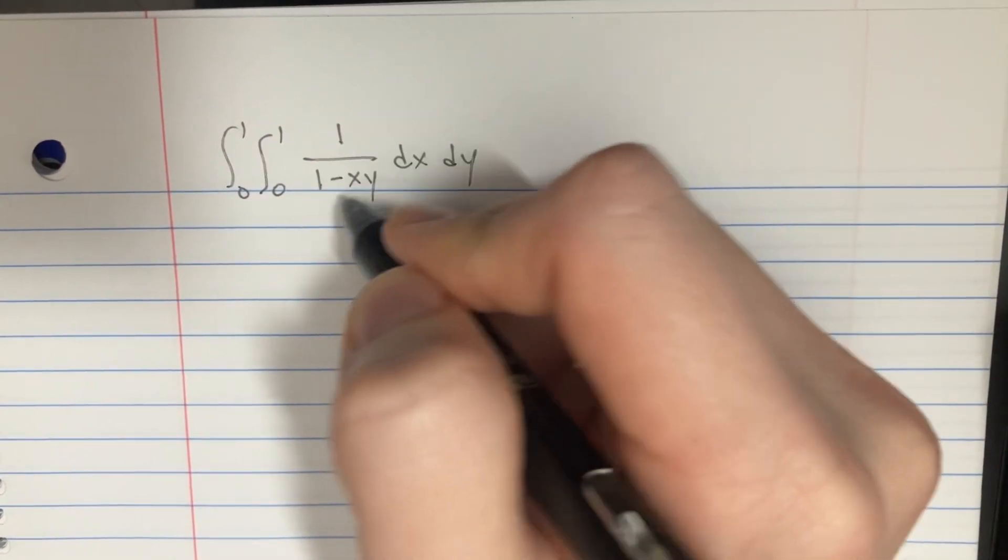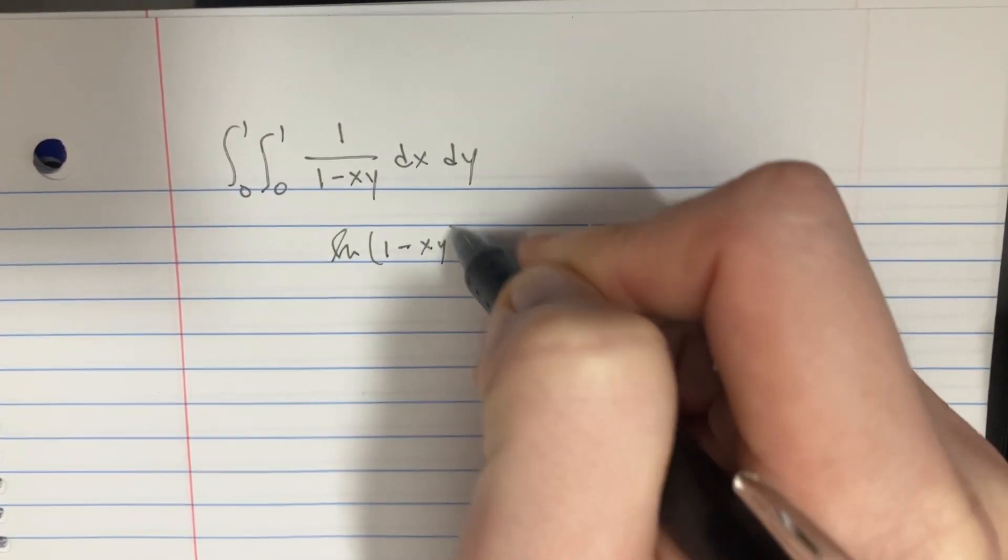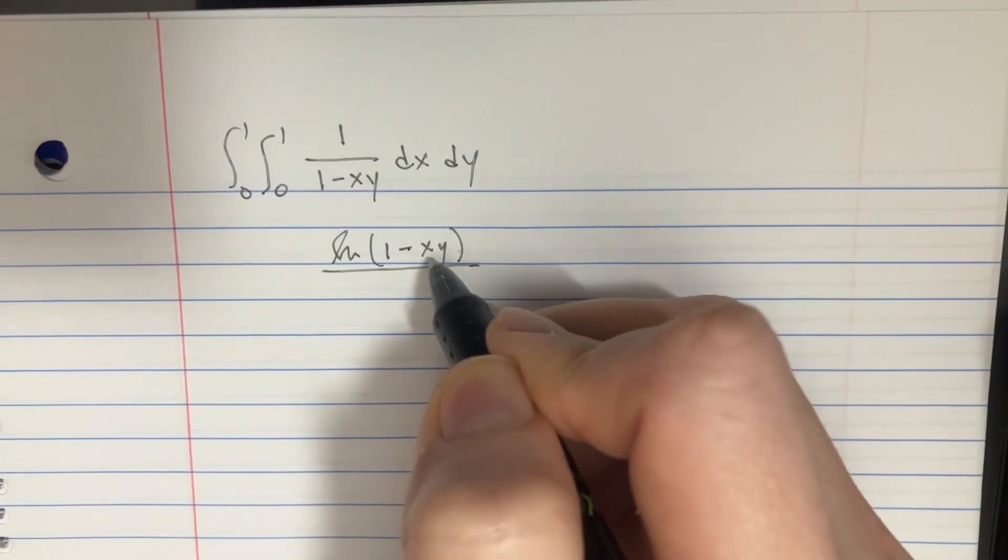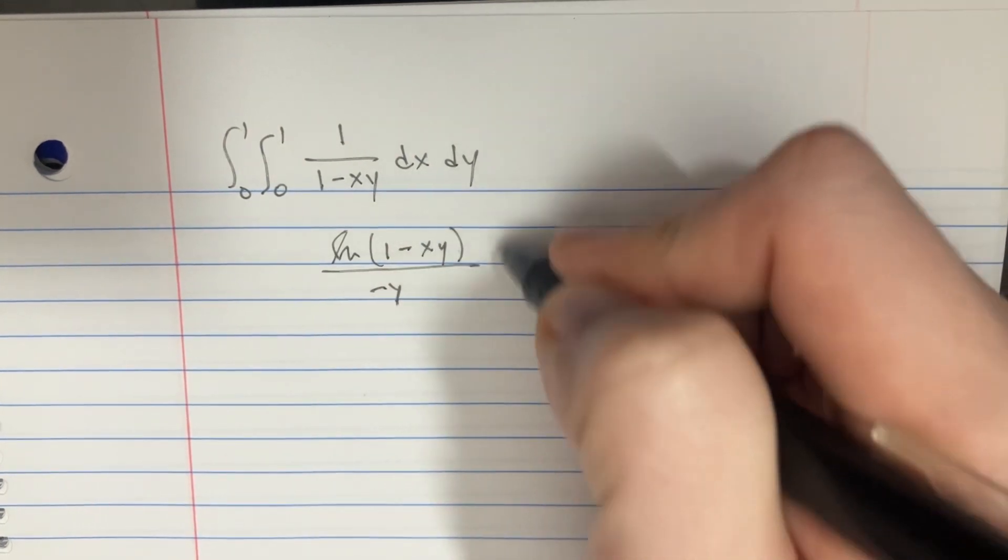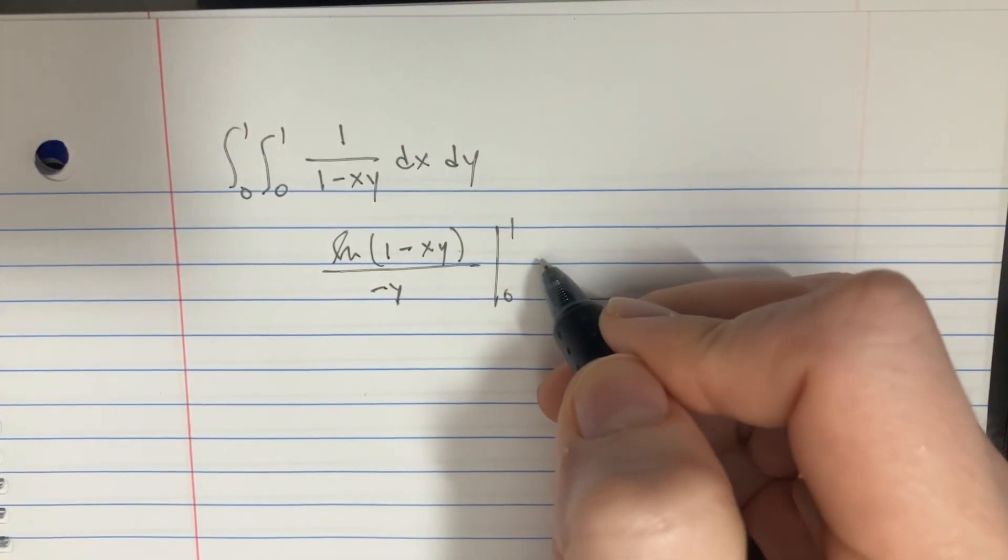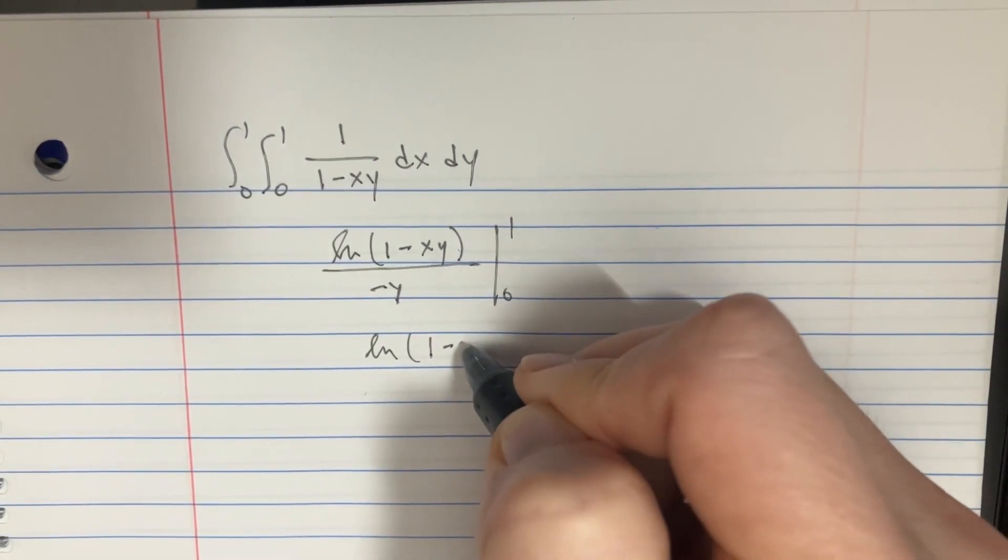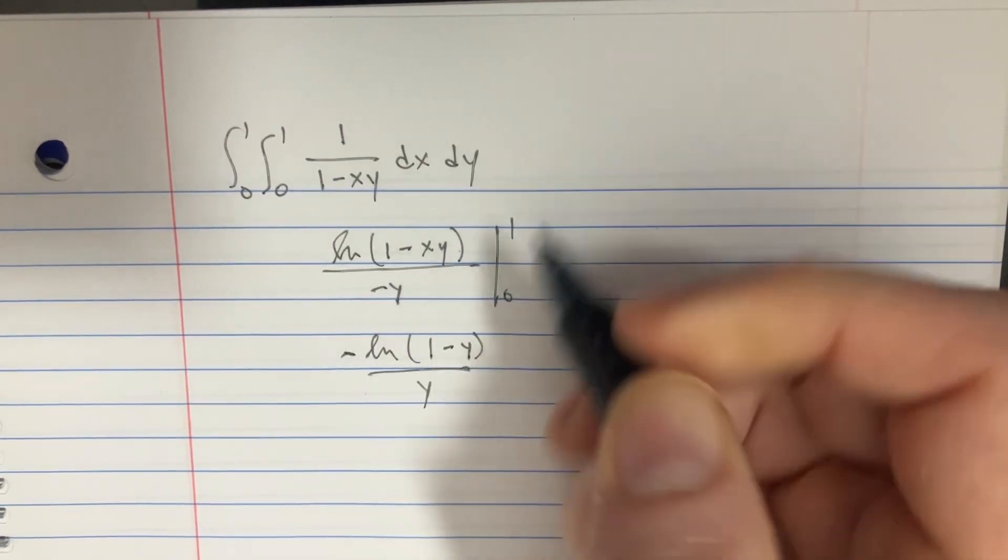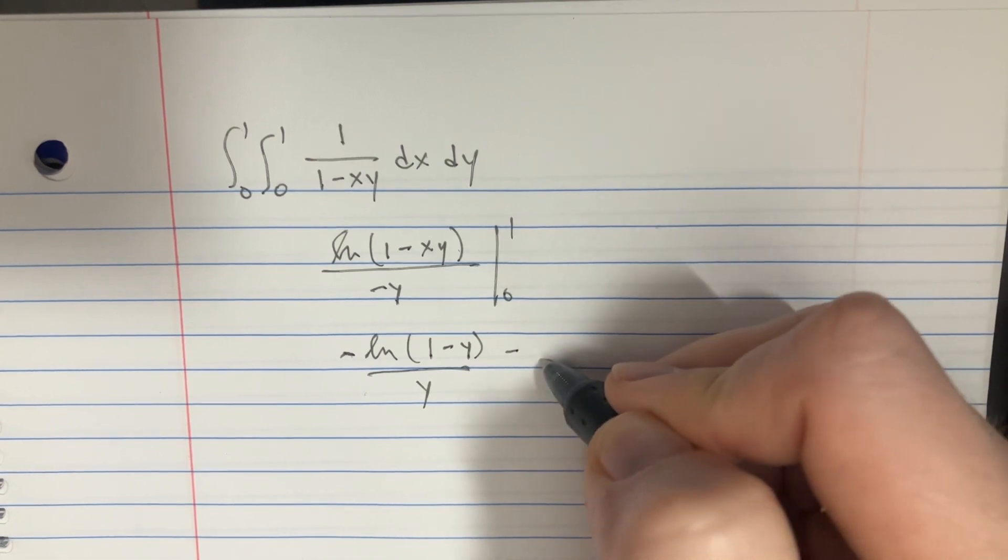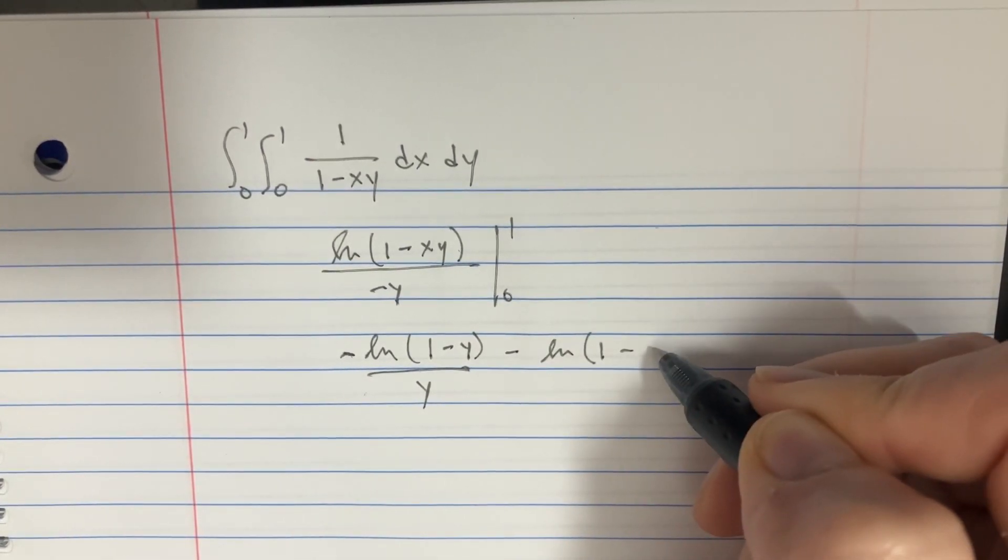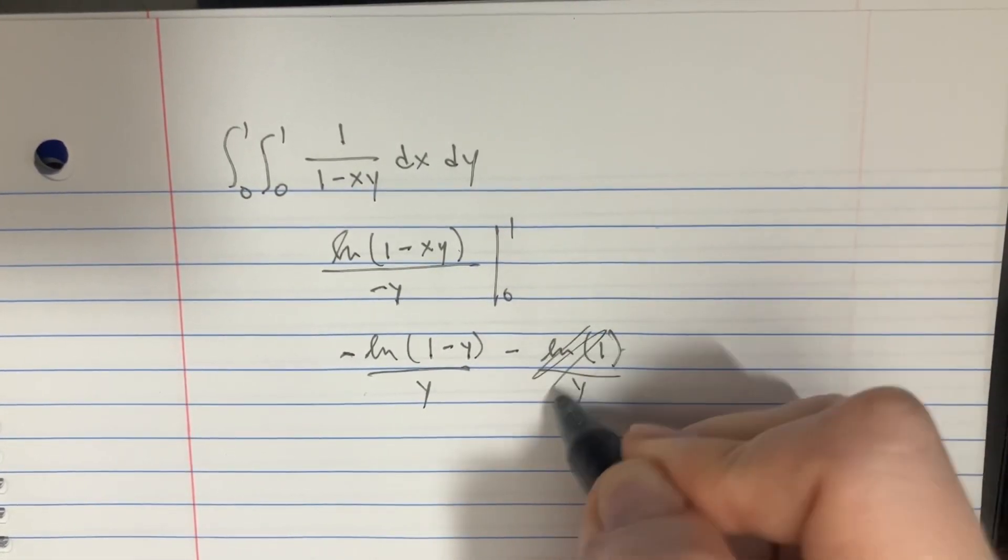We could probably use a u-substitution or just try to directly integrate this by saying ln(1-xy), and then we could divide that by the negative y, which would be the derivative of what's inside of here, and then we could go from 0 to 1 for y. And then we would end up with something like ln of 1-y divided by, well, let's make that the negative, and then if I plug that in there, I think we would get minus ln of 1 minus, well, just 1 in there, and so this would sort of go away, become nothing.